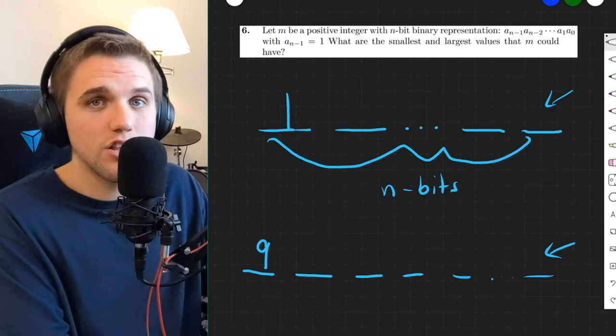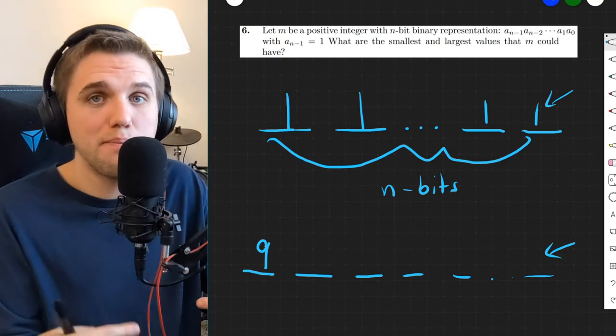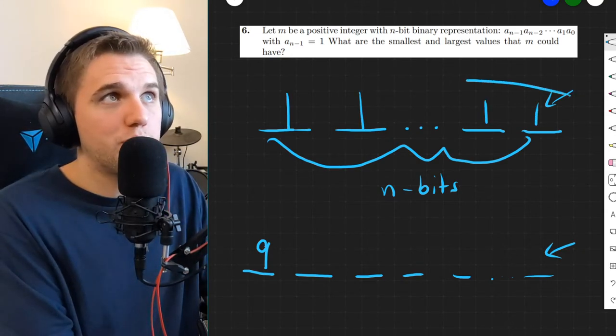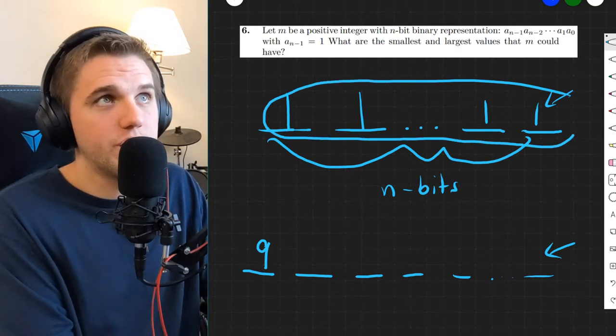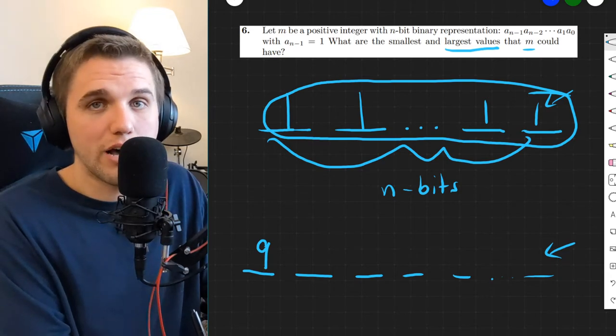To construct the largest possible binary number using these placeholders, we would want to put as many 1s as possible so that we can have as many powers of 2. So if we place 1s in all of the placeholders, that would give us the largest value that we can possibly have.